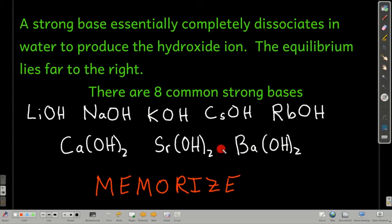These are pretty easy to memorize, though. They're all hydroxides, first of all. Second of all, they are the alkaline metals—lithium, sodium, potassium, cesium, and rubidium, the stable ones—and three of the alkaline earth metals: calcium, strontium, and barium with hydroxide.